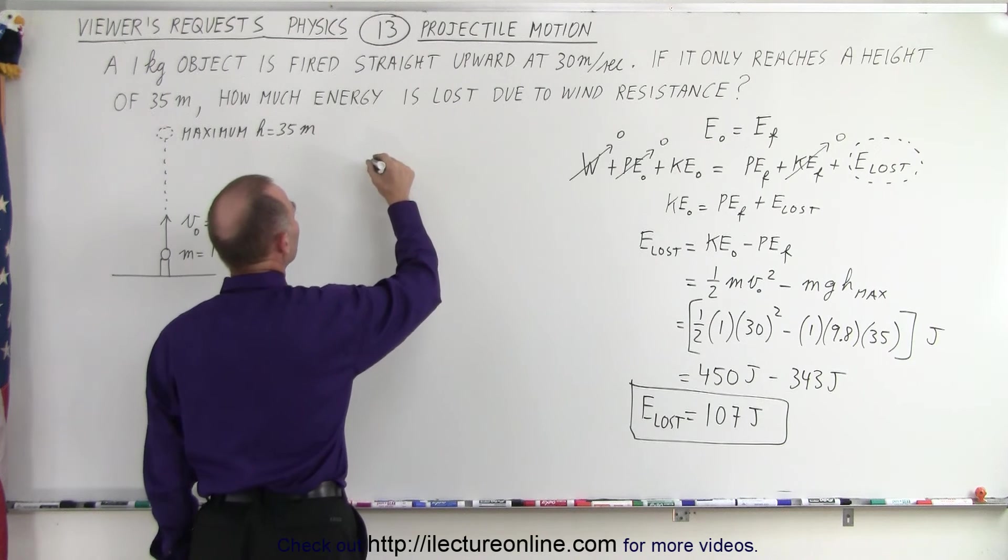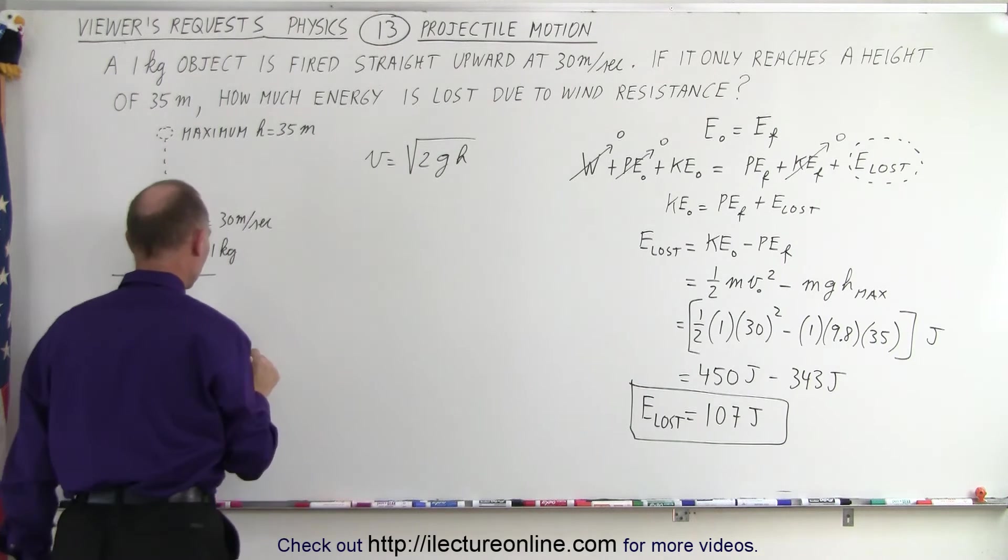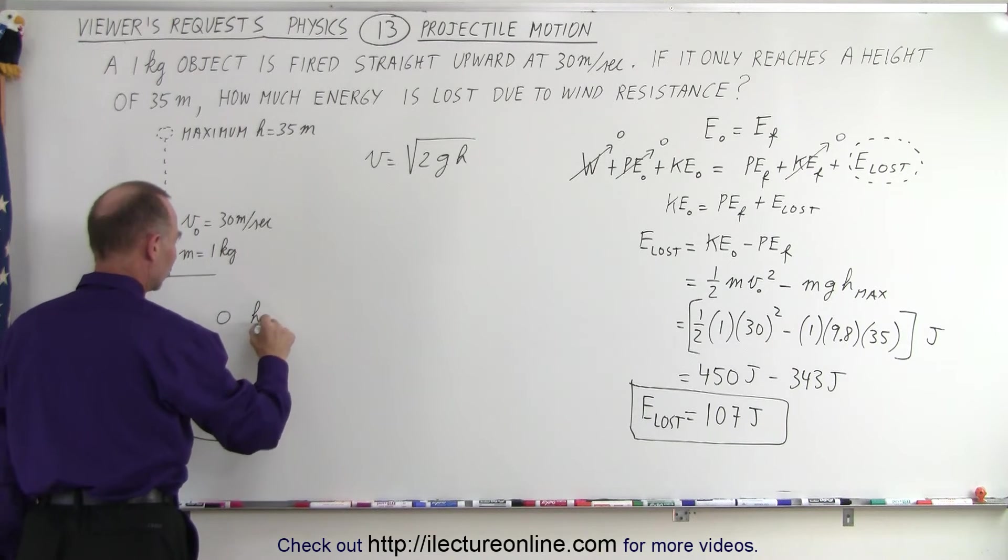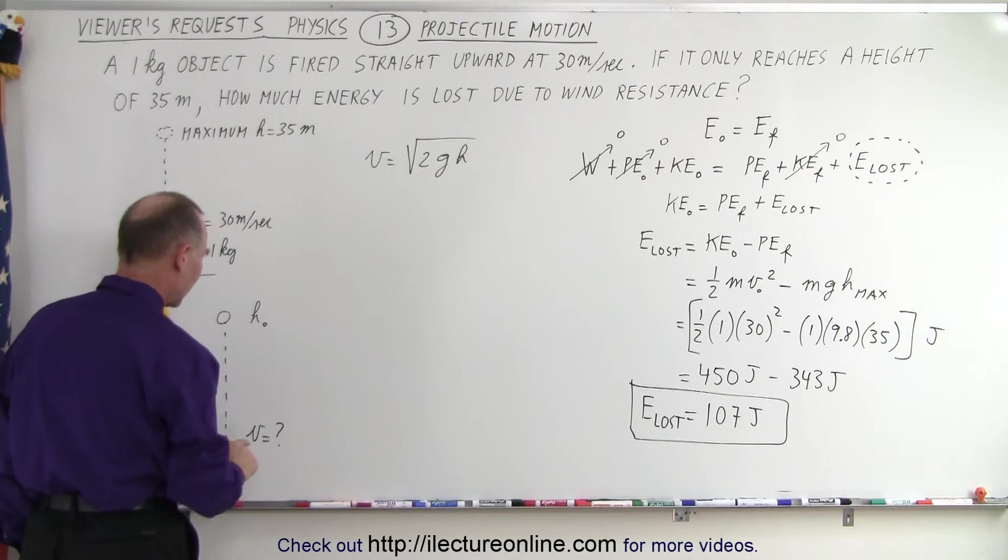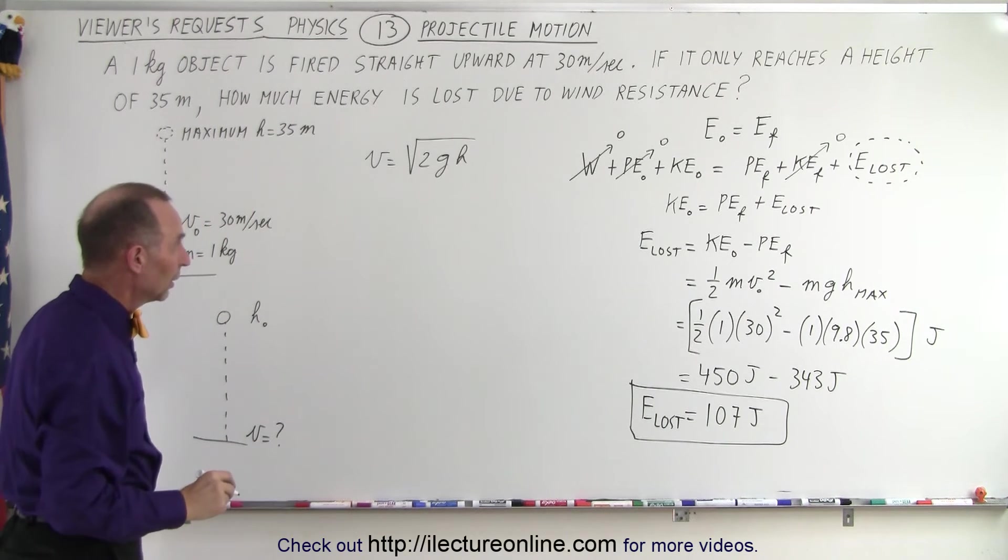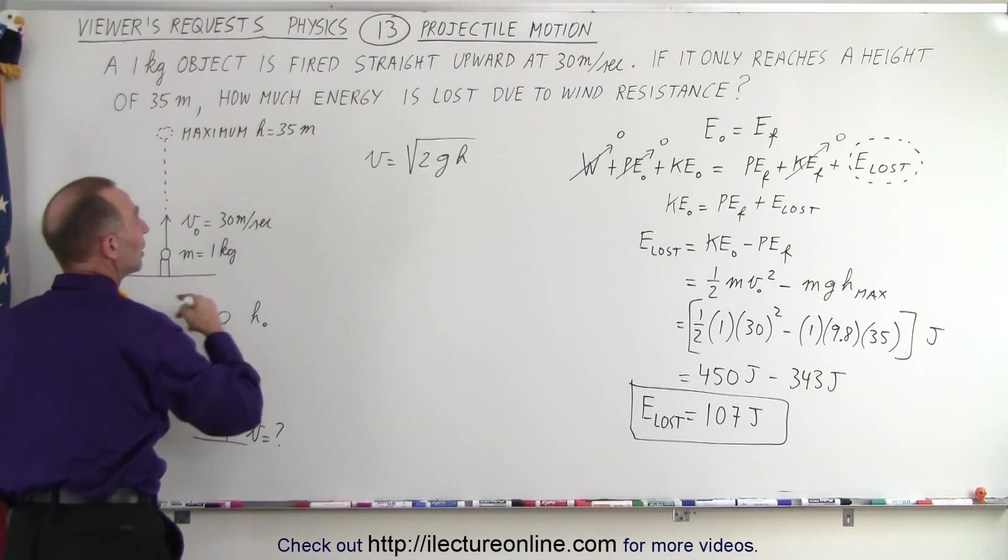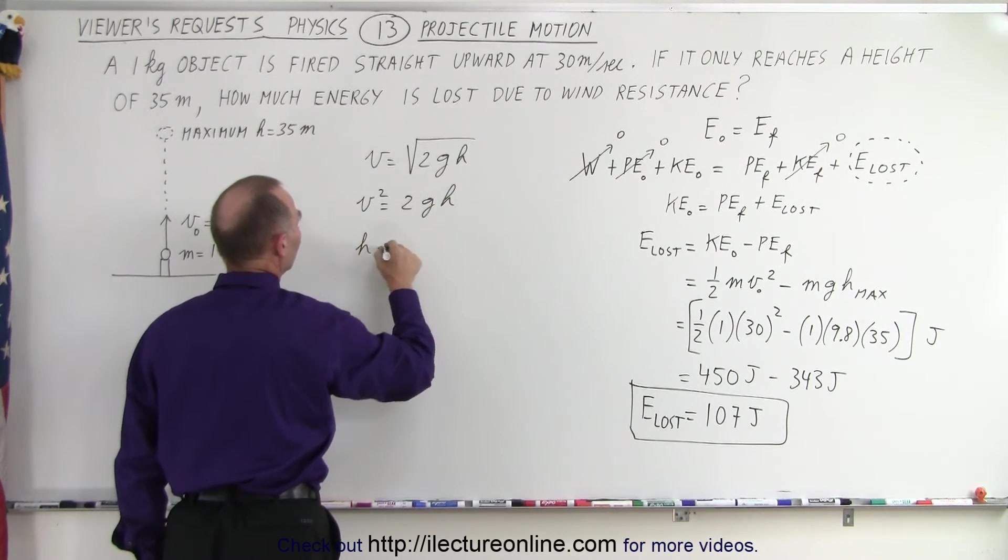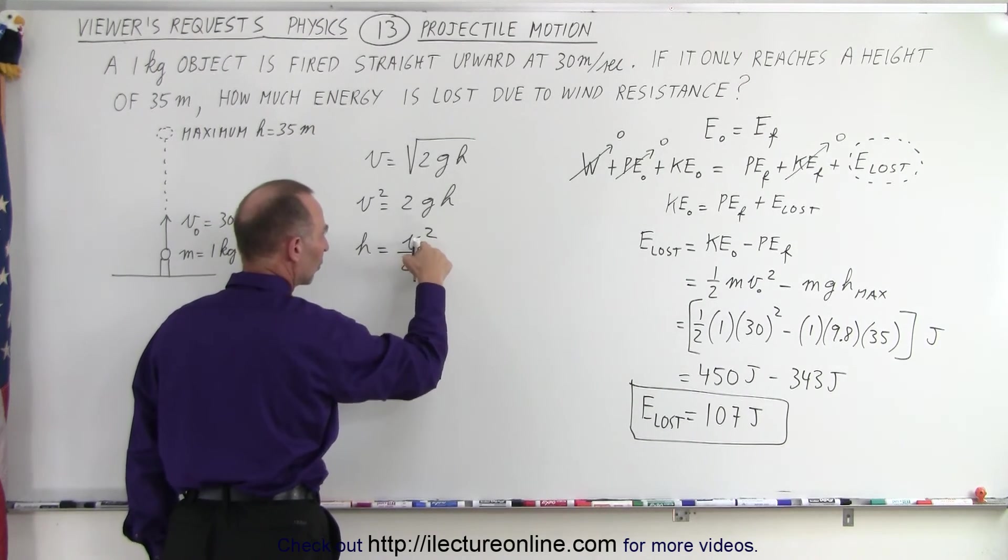All right, we know that the velocity is equal to the square root of 2GH. Now, that comes from when we have an object that's dropped from a certain height. So we'll have height initial, and we drop an object down to the ground. And at that point, velocity on the ground is going to be equal to 2 times G times H, and take the square root of that. So, that also works in reverse. When we have initial velocity, what will be the height reached? So, when we square both sides, we get V squared is equal to 2GH. So, H is equal to V squared divided by 2G. So, the height reached will be the velocity squared divided by 2G.